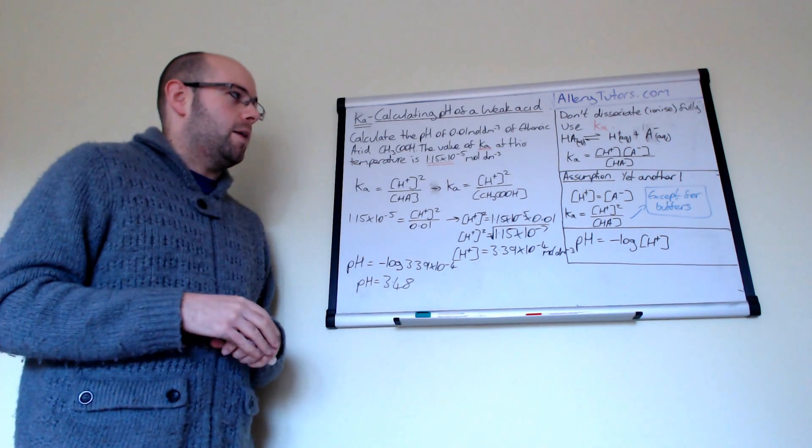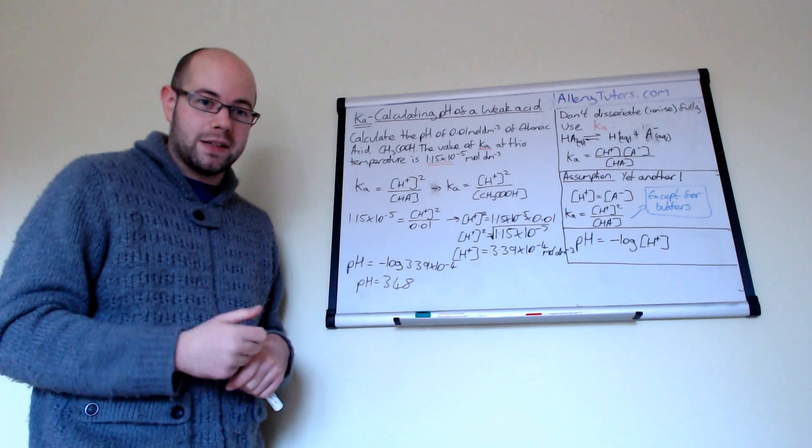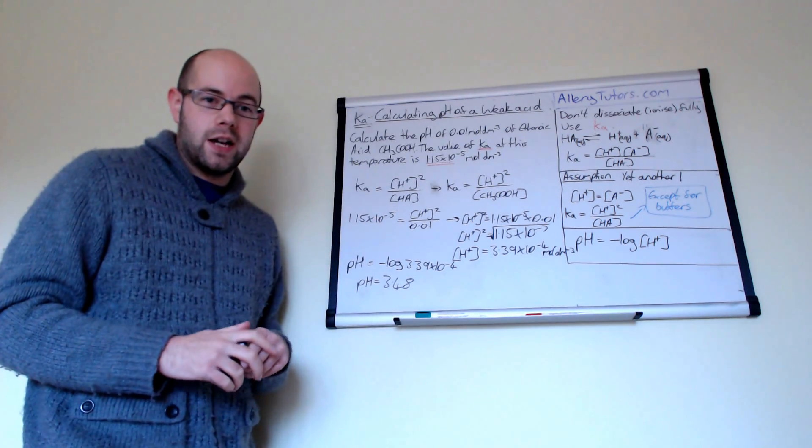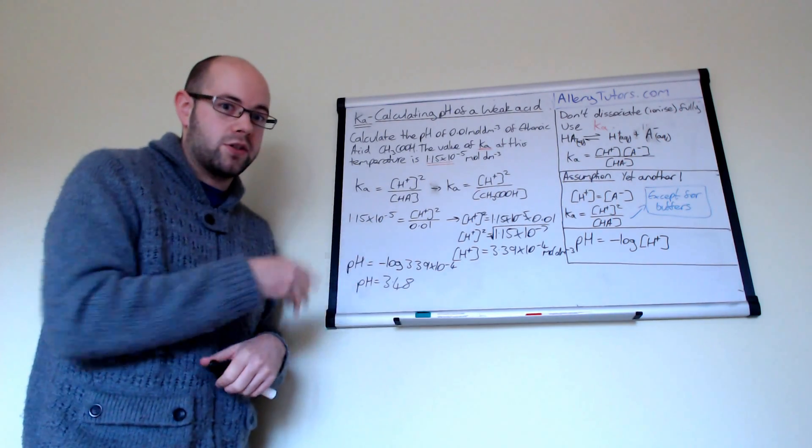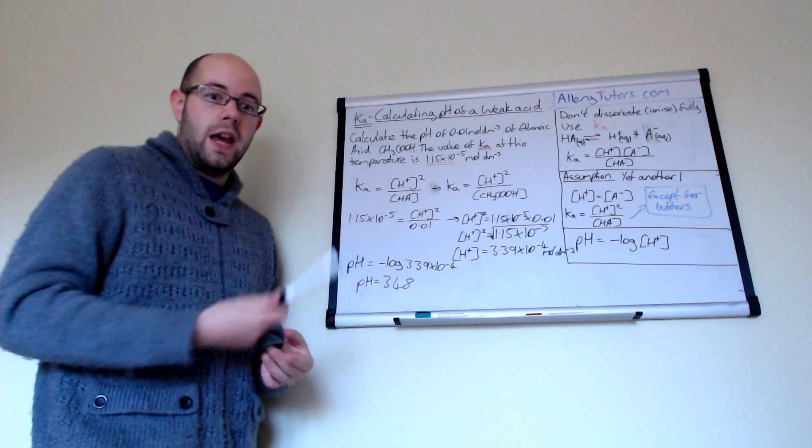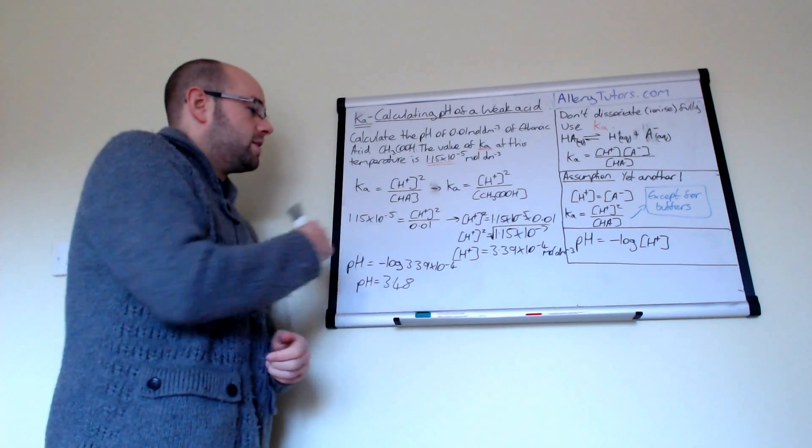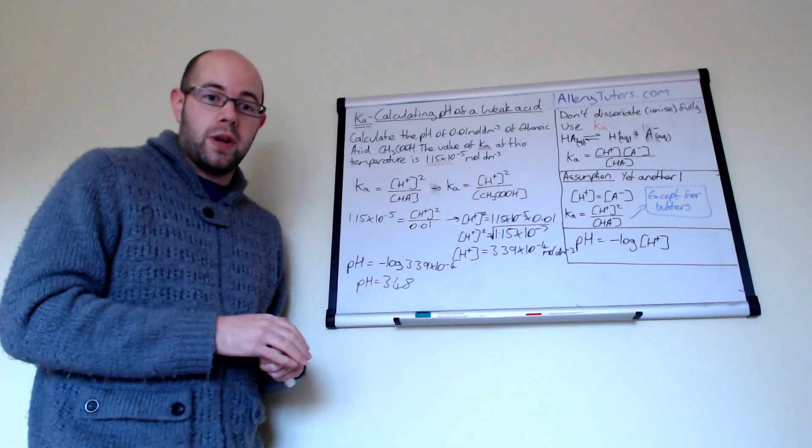And it is useful just to check your answer. And if you get a number that's bigger than 7, you've obviously done something wrong in your calculation. And you need to go back and just double check your numbers. But it is really good that you're able to spot if that answer is sensible and not just accept it as just any old number. So this is how we work out the pH of a weak acid.